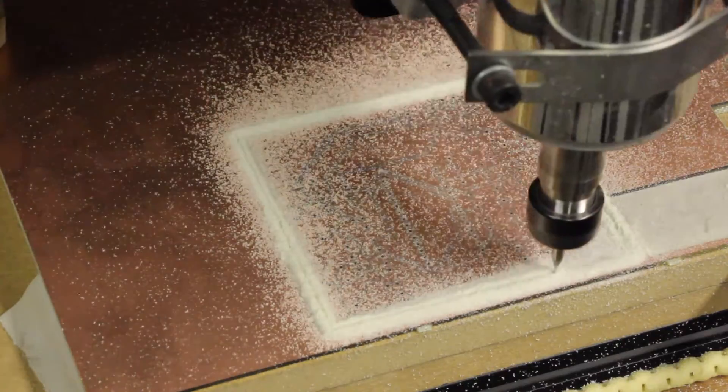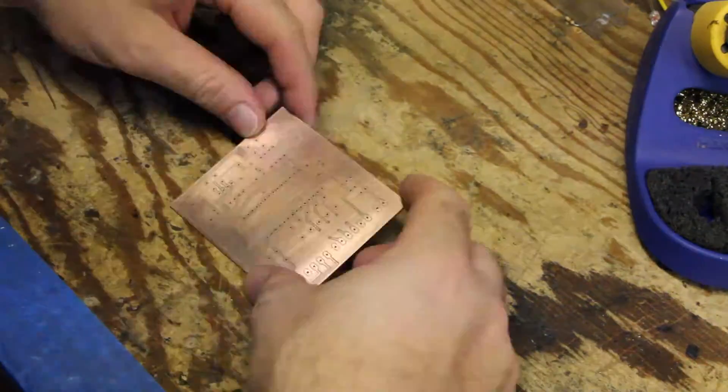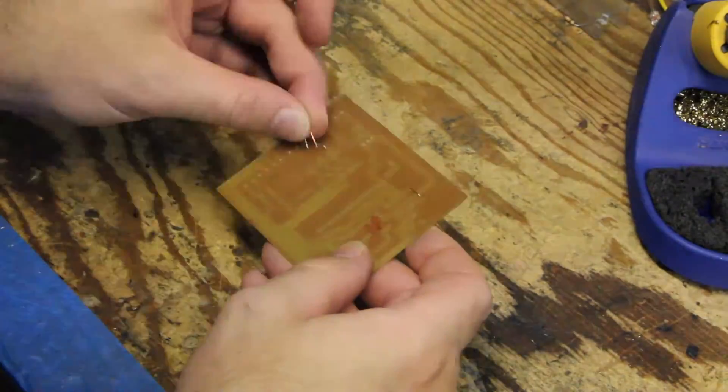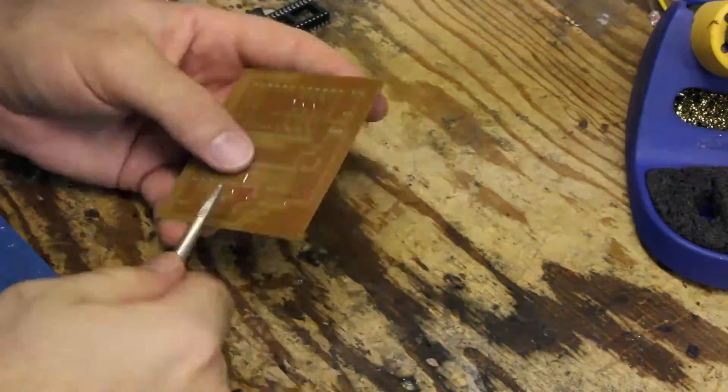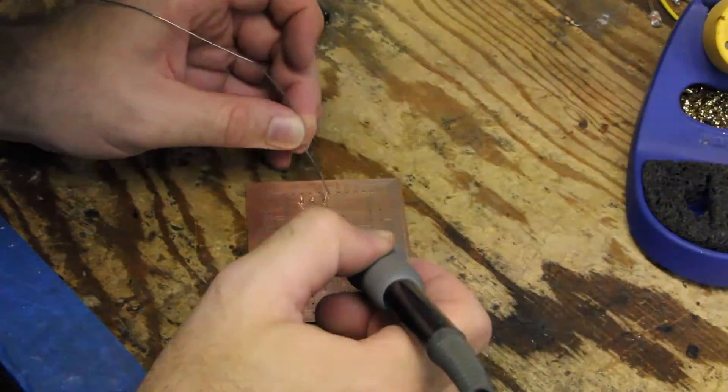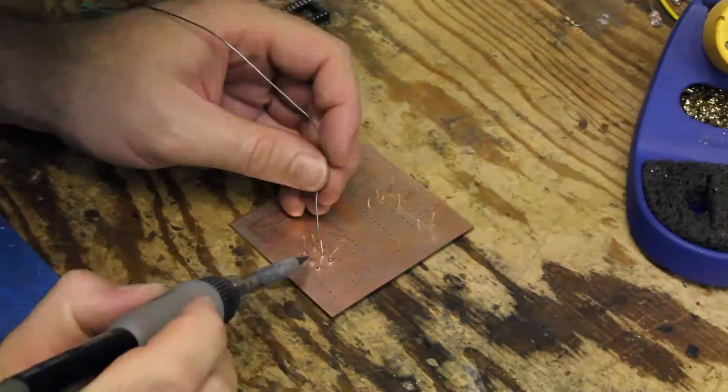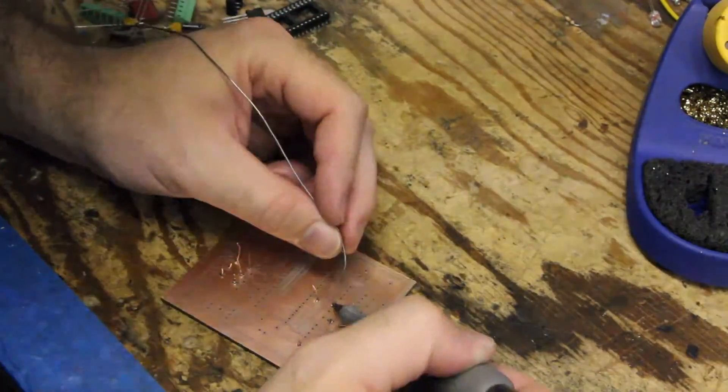Coming up next, I'm going to be assembling the board. Boy, these jumpers... this is a single-sided board, so I had to put jumpers in because it wasn't possible to route everything on one layer. I need to figure out how to make these pads bigger because they were really hard to solder.